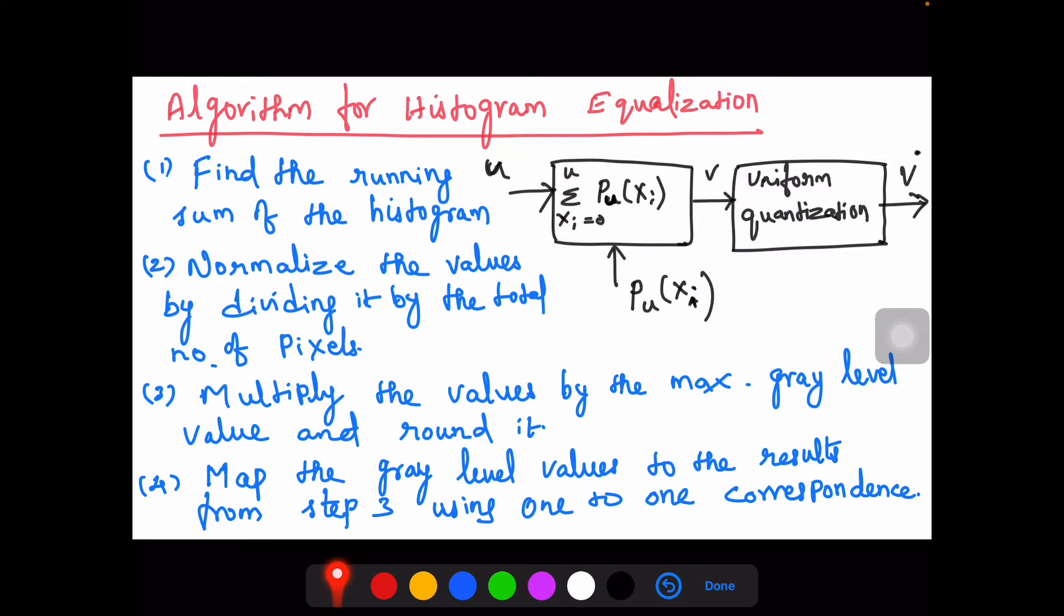You have to find the running sum of the histogram, the cumulative sum. Next, normalize the values by dividing by the total number of pixels. Then multiply the values by the maximum gray level and round it off.